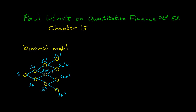So this is our model of the asset. We have u and v for the factors that the asset goes up or down every discrete time step — a delta t. Because u times v equals v times u, this will be a recombining tree, which means that up-down is the same as down-up, and it becomes this nice regular lattice.